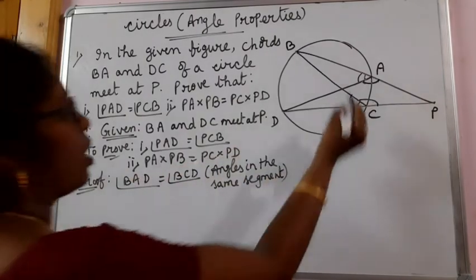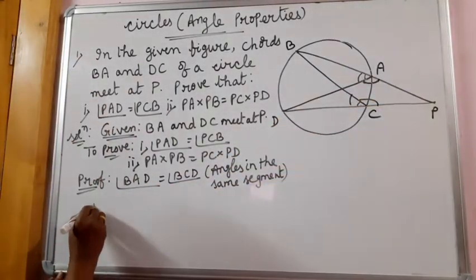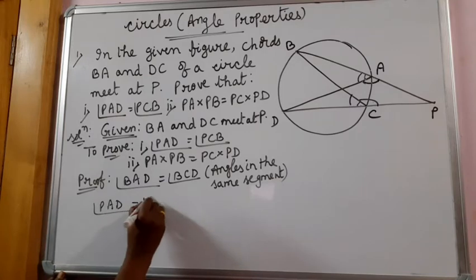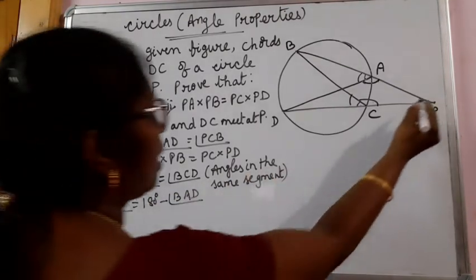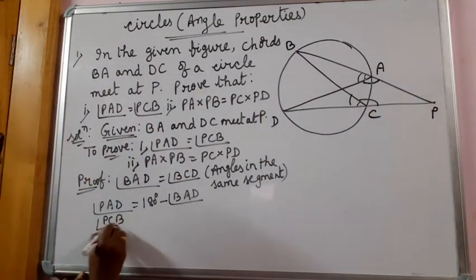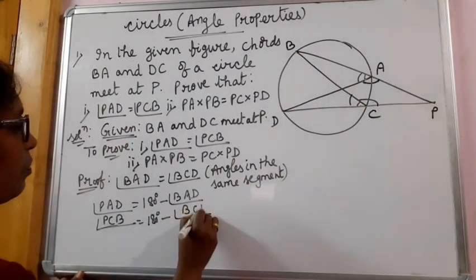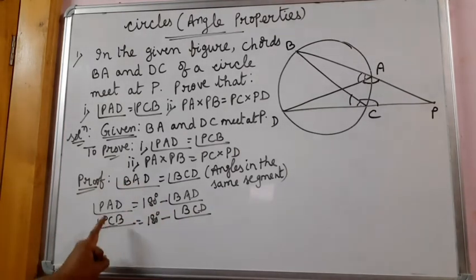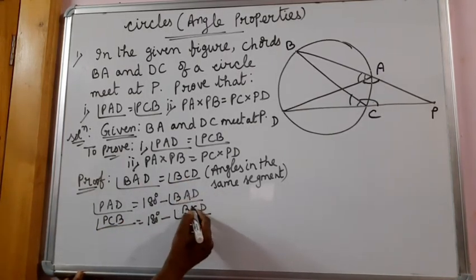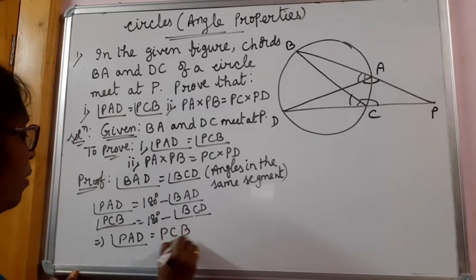They are equal. So, angle PAD and angle BAD form a linear pair. Therefore, angle PAD is equal to 180 minus angle BAD. And same way, angle PCB is equal to 180 minus angle BCD. Since angle BAD equals angle BCD, that implies angle PAD is equal to angle PCB.